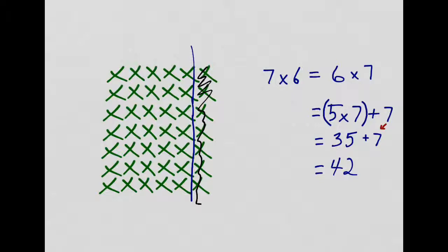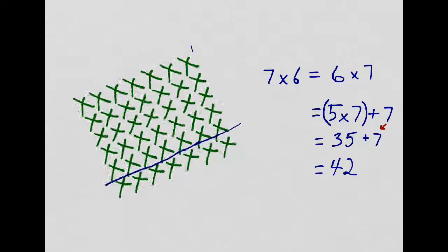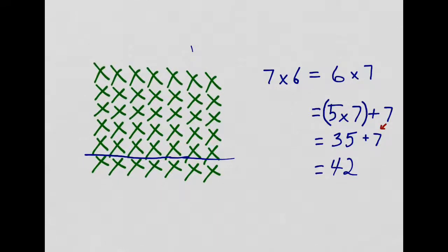So, when I rotate it back, I know, because I counted by 5s, that this part of the array is 35. I didn't have to count by 7s, which I find challenging. All I did was I counted by 5s after using commutative property. And I know that this little part is worth another 7.